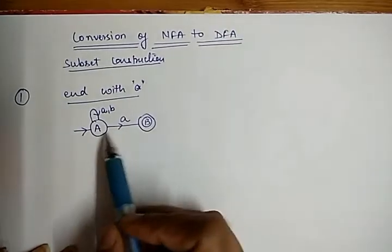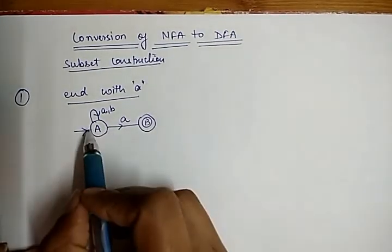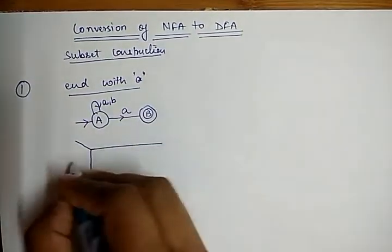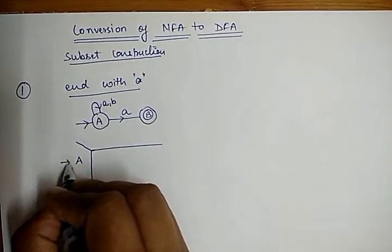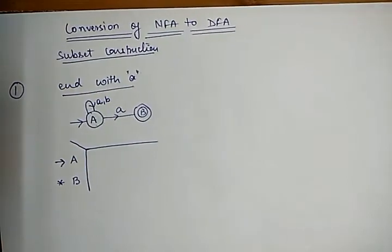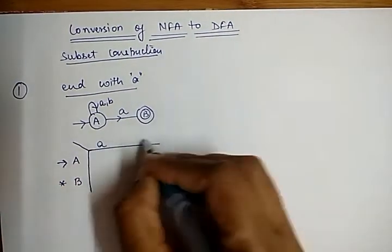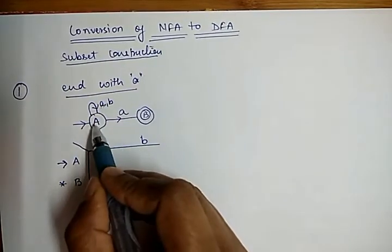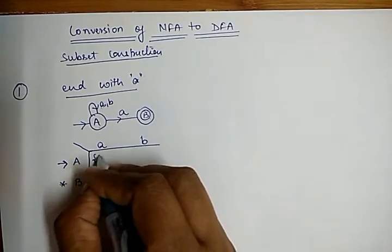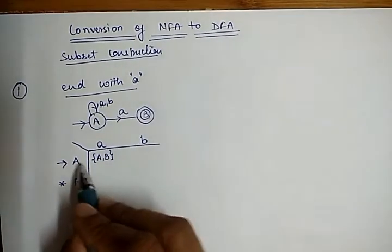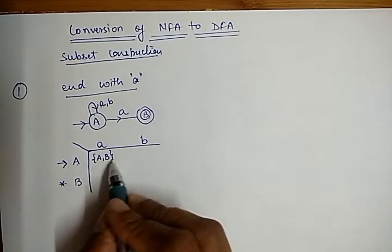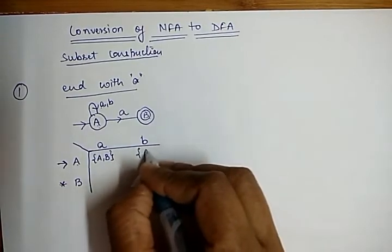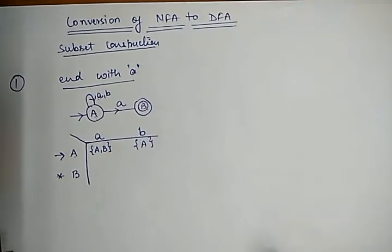Now to convert this NFA into a DFA, I first create a transition table for this NFA. I have two states A and B, where A is the initial state and B is the final state. I have two inputs: small 'a' and small 'b'. From state A with input 'a', it either goes to A or to B, so I write it as {A, B}. From state A with input 'b', it goes to A itself. This is how we create the transition table.